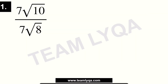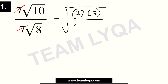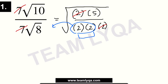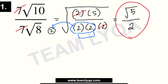Let's see how you did. Question number 1: 7 square root of 10 over 7 square root of 8. Very obviously the 7 on top and the 7 on the bottom cancel to 1. Then combining inside one big radical, 10 is 2 times 5 and 8 is 2 times 2 times 2. Cancel one 2 from top and bottom. The remaining pair of 2s on the bottom comes out as a single 2. What's left on top is the square root of 5, and on the bottom is 2. The answer is the square root of 5 over 2.